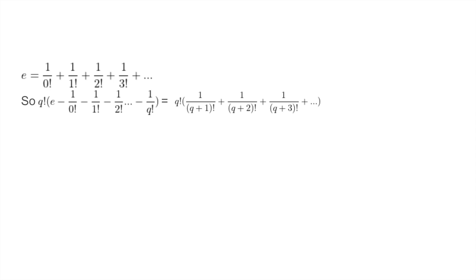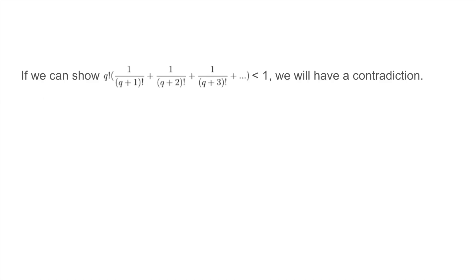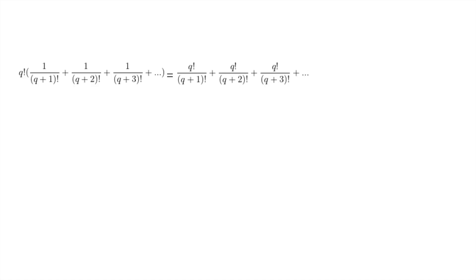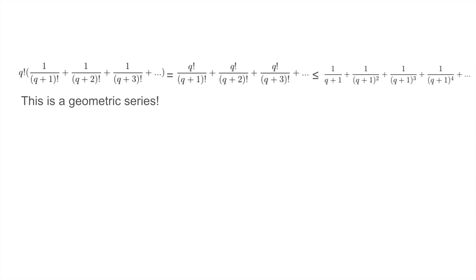Since we already showed that this is an integer, we can cause a contradiction if we can show that this is actually less than 1. Note that q factorial times 1 over (q+1) factorial plus 1 over (q+2) factorial etc. equals q factorial over (q+1) factorial etc., which is less than or equal to 1 over (q+1) plus 1 over (q+1) squared plus 1 over (q+1) cubed etc. But this is just the geometric series, so we can use the geometric series formula to find that this equals 1 over (q+1) divided by 1 minus 1 over (q+1), which equals 1 over (q+1) divided by q over (q+1), which equals 1 over q.